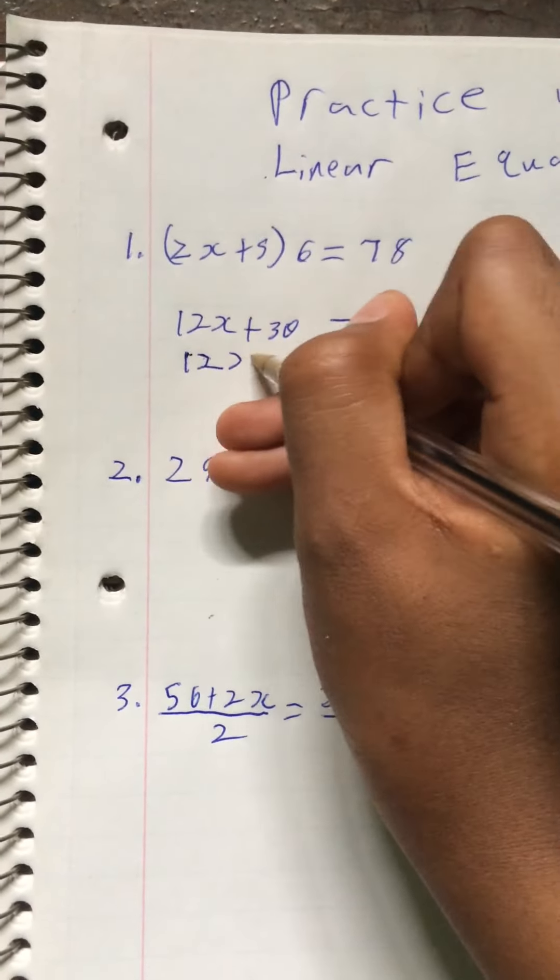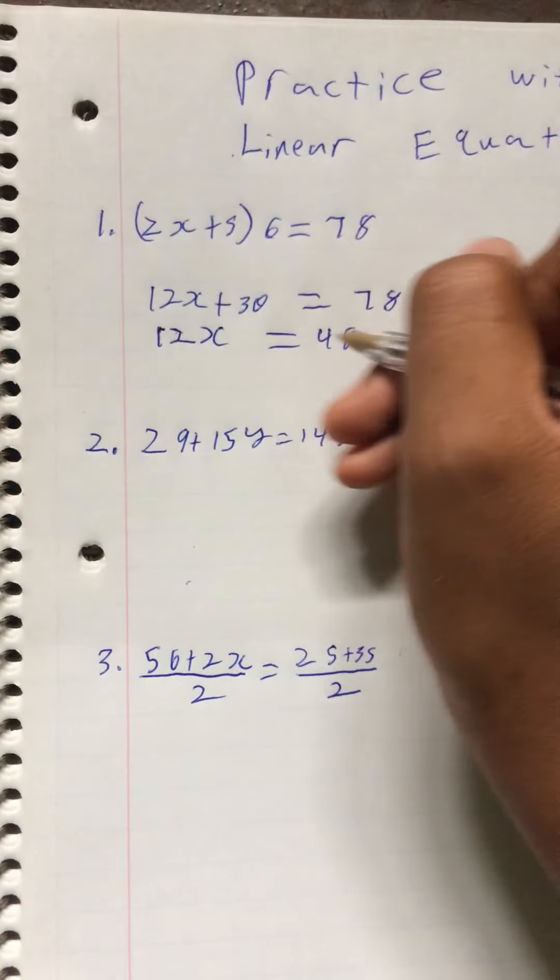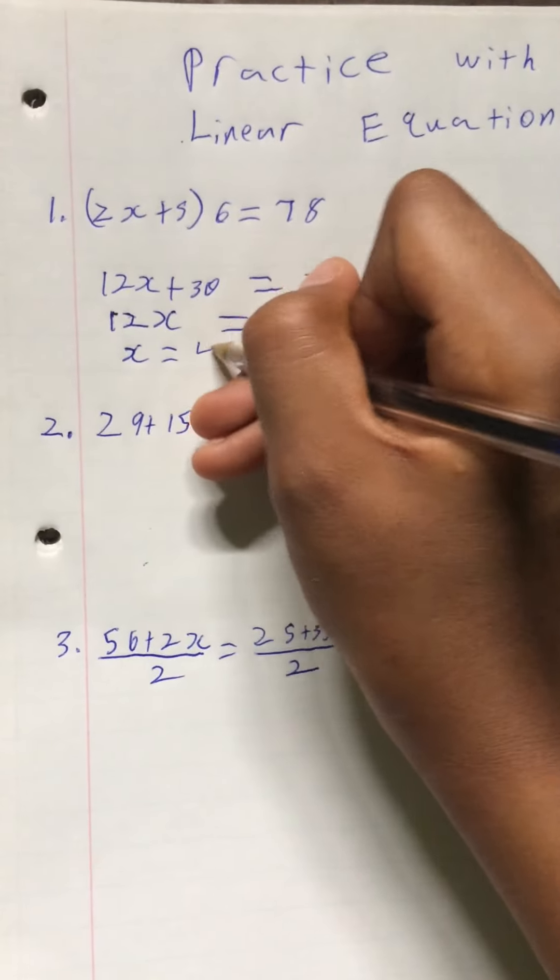So 12x would equal 78 minus 30, which is 48. Then x would equal 48 divided by 12, and that equals 4.